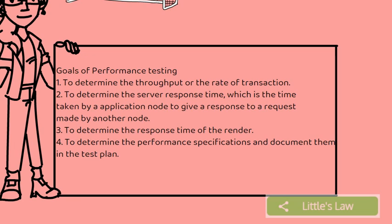The second metric is response times. Response time refers to the amount of time the application server takes to return the results of a request to the user. Response time is affected by factors such as network bandwidth, number of users, number and type of requests submitted, and average think time.